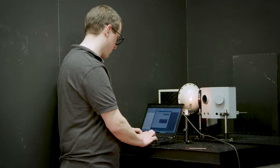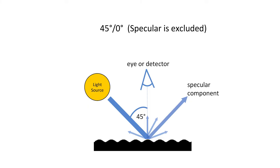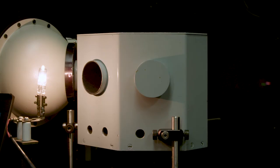One of the most common geometries is zero degrees 45. For this measurement we illuminate the sample at zero degrees and view the sample at 45 degrees. This measurement explicitly excludes the specular peak so is primarily a way of measuring colour.